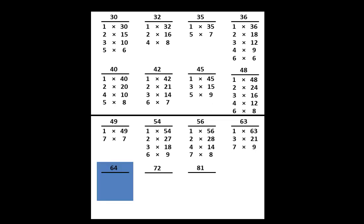On your paper, write that we can think of 64 as 1 times 64 or 2 times 32 or 4 times 16 or 8 times 8. Those are all the factor pairs of 64.